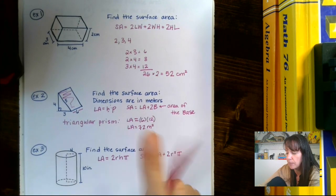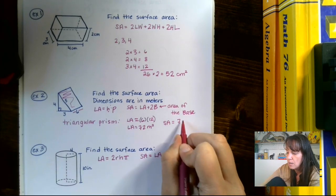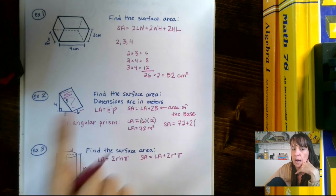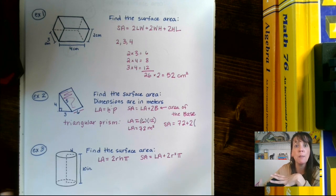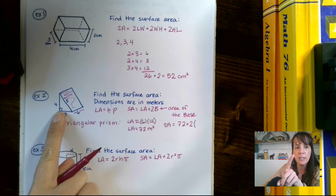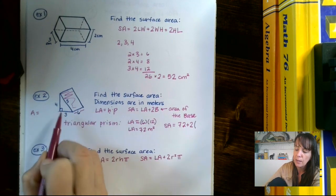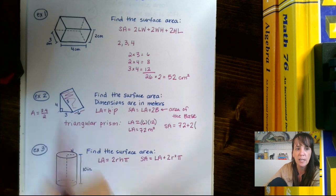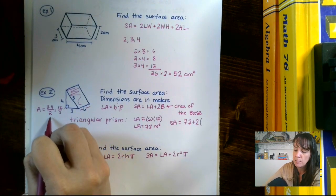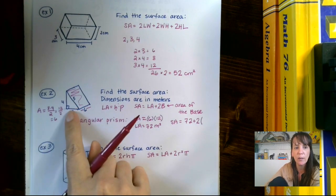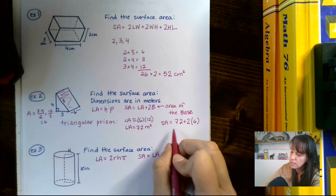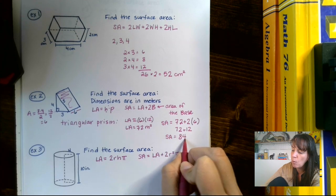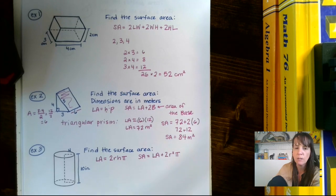Now for surface area: we take the lateral area, which is 72, plus 2 times the area of the base — capital B means area of the base. Our base is the triangle, and to find its area we take the base times the height and cut it in half. Three times four is 12, divided by 2 gives us 6. So we have 72 plus 2 times 6, which is 72 plus 12, giving us a total surface area of 84 meters squared.